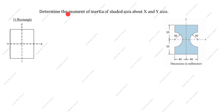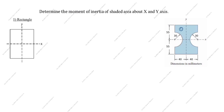Welcome to my channel, Excellent Ideas in Education. Today we are going to solve this moment of inertia problem — an engineering mechanics problem: determine the moment of inertia of the shaded area about the x and y axis. The x-axis and y-axis are given at the center of the drawing. To find the shaded area, we will take: first, a rectangle; second, a semicircle; and third, also a semicircle.